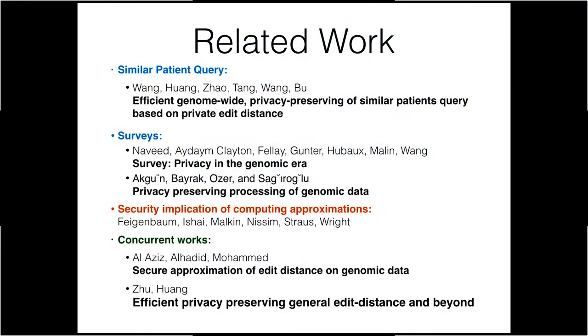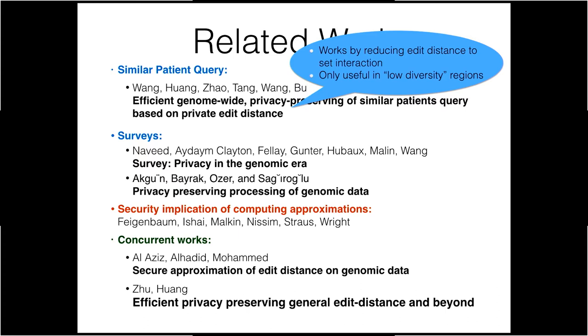Some related work: there were other works on genomics and secure computation, including work that solves the same problem but focusing on other regions with low diversity, where the edit distance approximates a Hamming distance since most mutations are substitutions rather than insertions and deletions — a much easier problem. Those approaches work on larger regions, making the two results somewhat incomparable. There are also surveys on genomics and cryptography, some security implications when using approximations, and several concurrent works from other IDASH competitors.